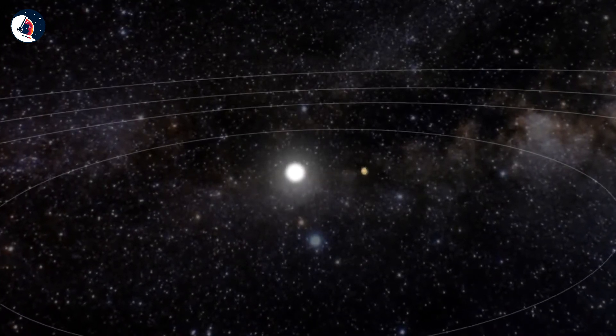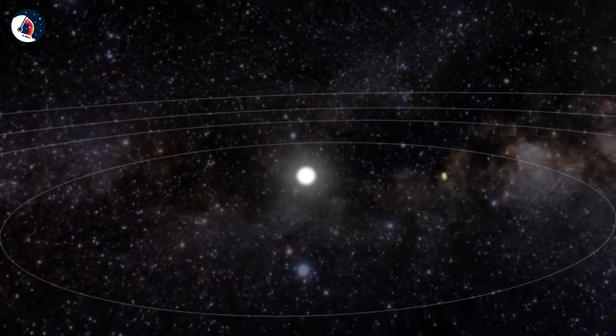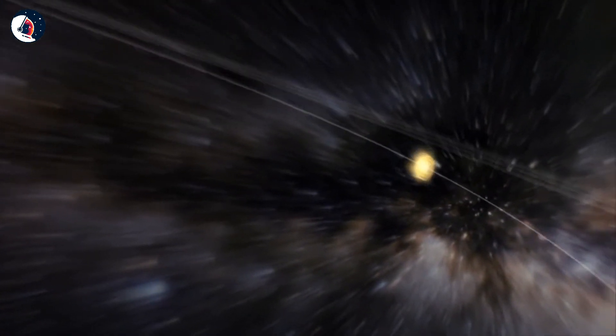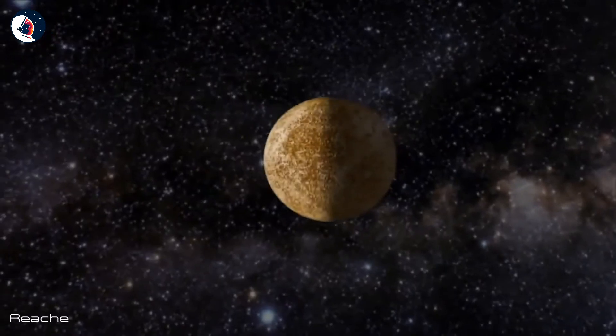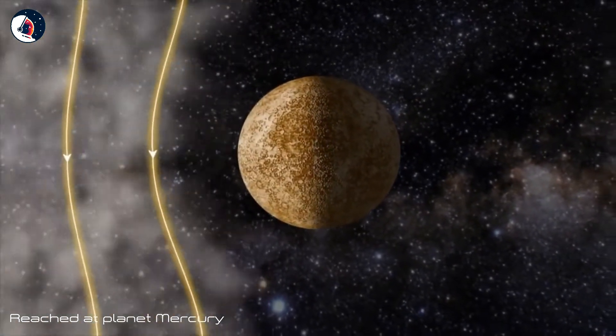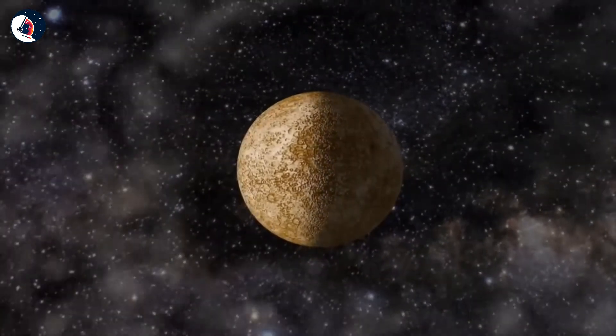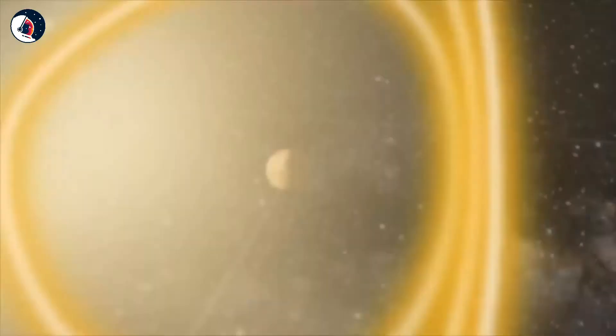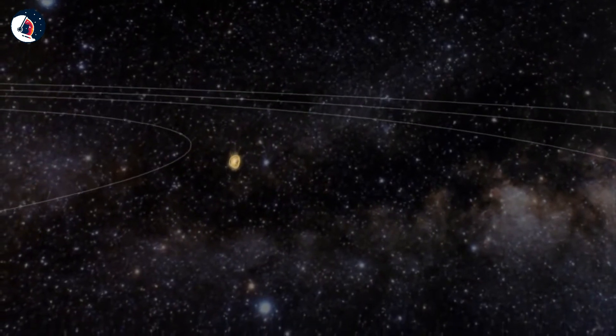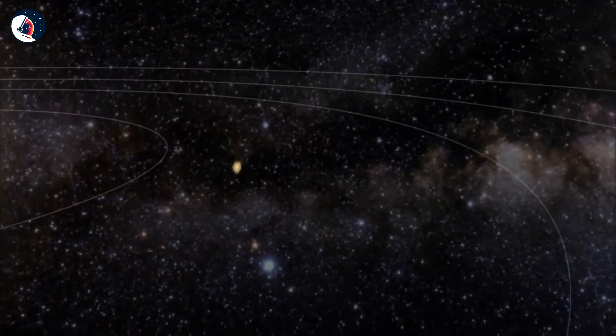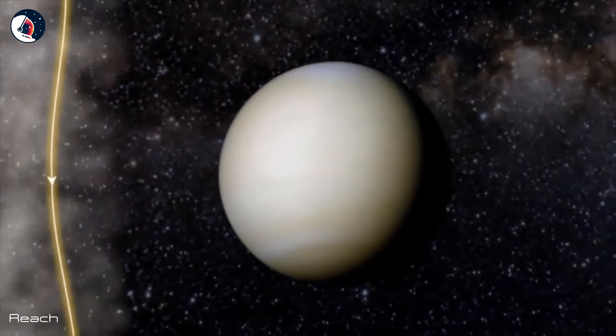The solar storm can reach speeds over 8 million kilometers an hour. After six hours, it blows past the planet Mercury. After 12 hours, the planet Venus.